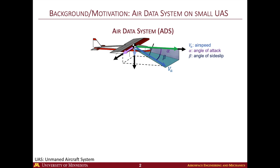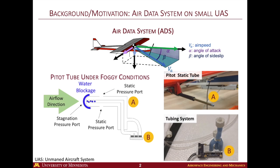Here, we are mainly concerned with three important air data quantities: airspeed, angle of attack, and sideslip. Air data is important because it ensures the aircraft is in a safe flight envelope. One of the challenges is that low-cost air data systems are prone to fault. On the right, it is shown a typical low-cost ADS used on a small UAS.